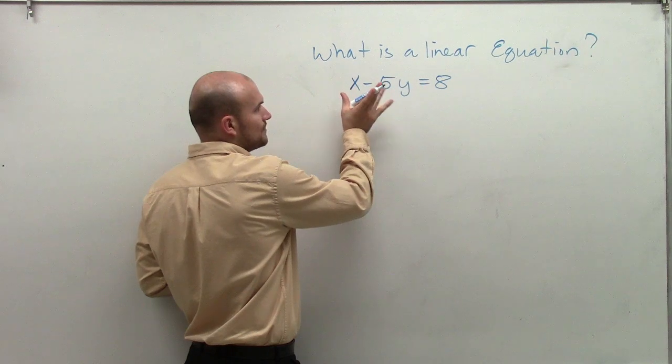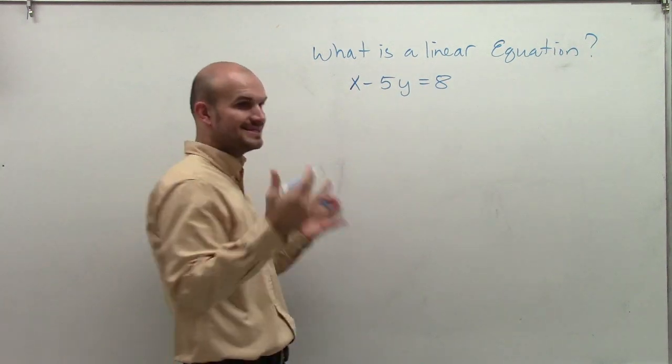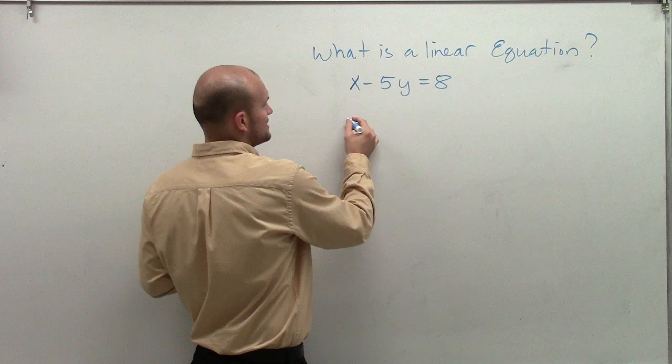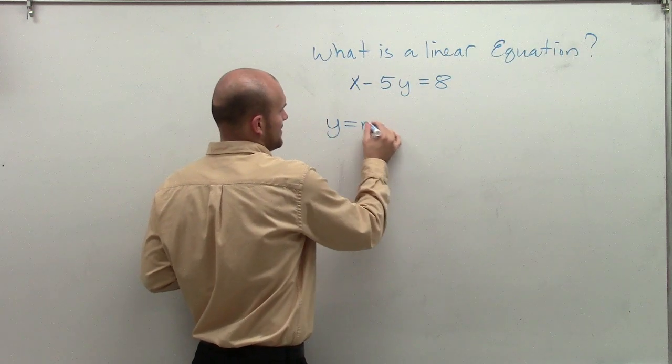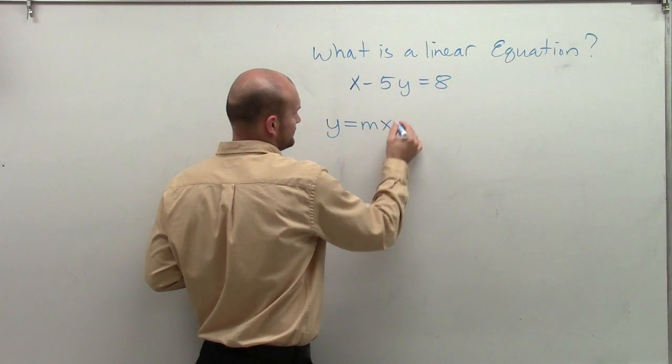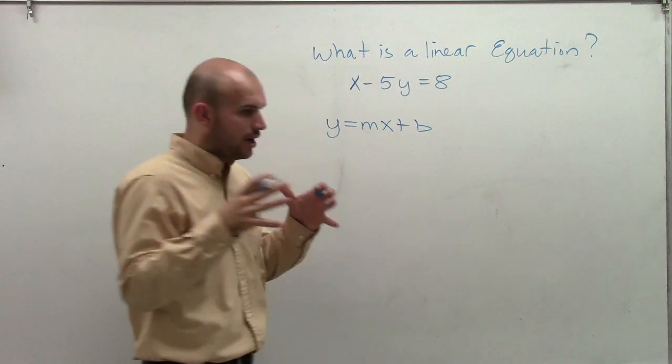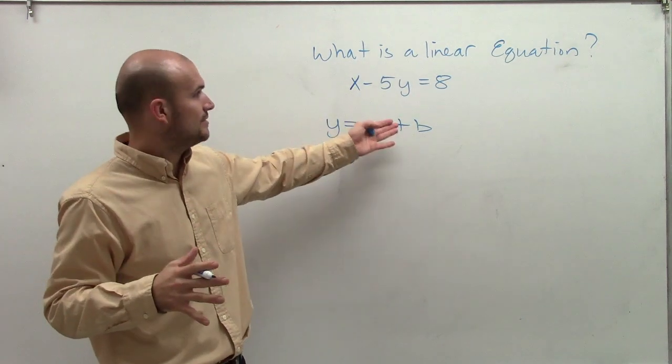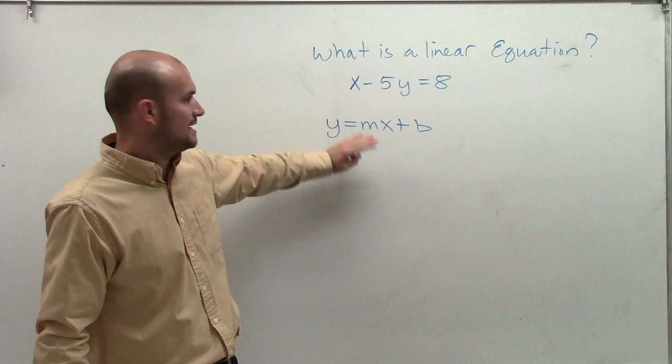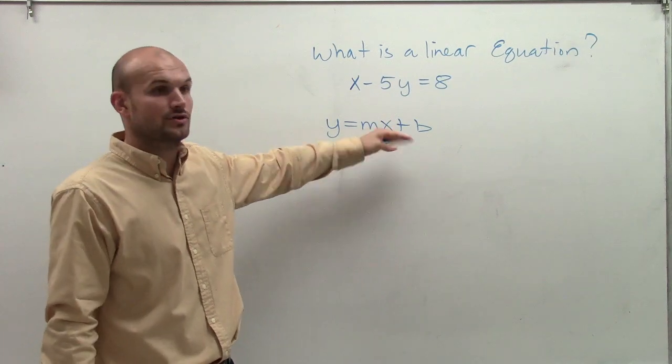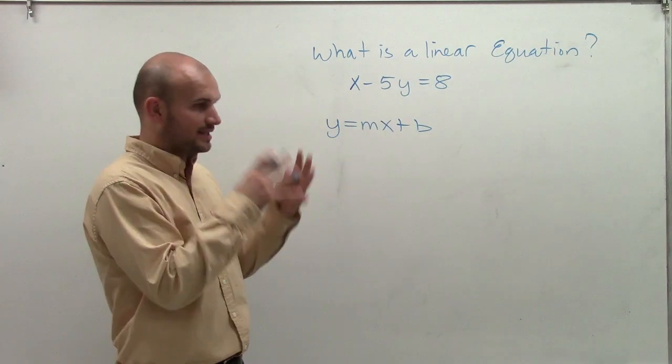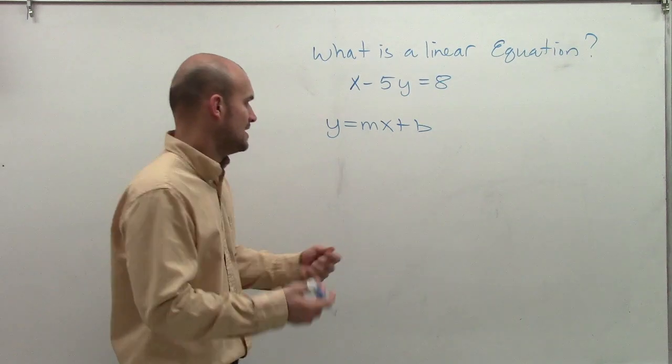Whenever you have two variables, and we want to determine is it a linear equation or not, let's look at it in y equals mx plus b form. All linear equations can be written in this format, meaning they're also going to create a line. So a linear equation, when graphed, is going to create a line.